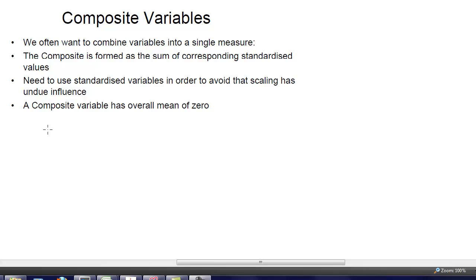We often want to use composite variables because we want to measure some concept that cannot be captured with one variable only. So that concept may be very complex and therefore we want to combine certain variables into a single measure for such a concept.